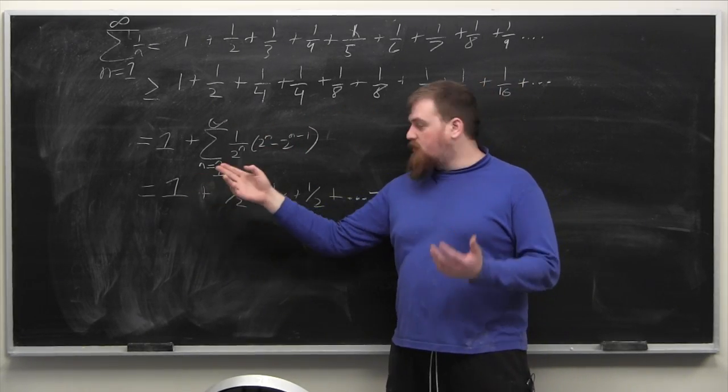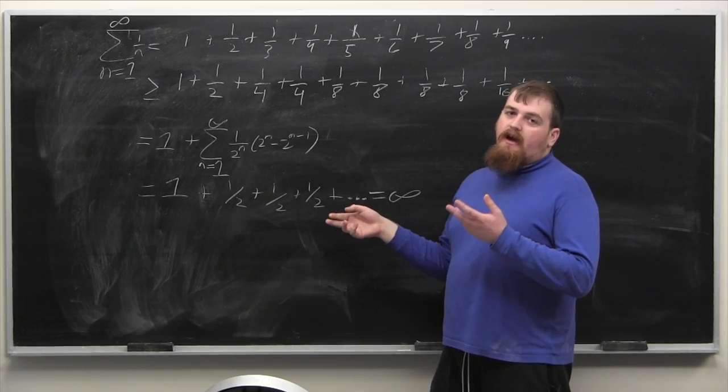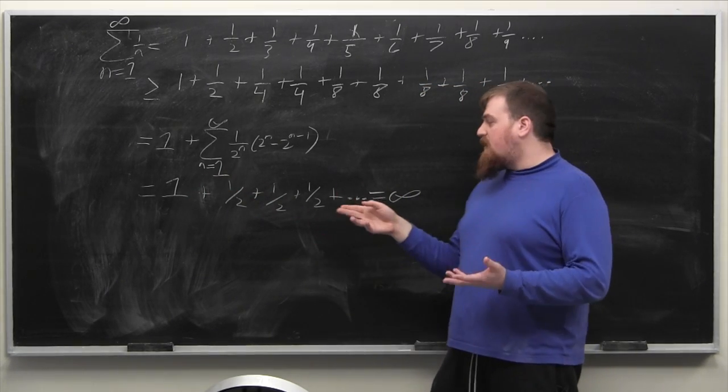So the sum is going to be equal to 1 plus 1 half plus 1 half plus 1 half, infinitely many one halves and infinity times one half is infinity.